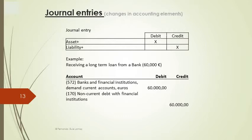We debit the bank account — the increase in the asset cash bank account — and at the same time we recognize the debt with the bank. That is, we credit a liability that stands for the debt with the financial institution. The code numbers on the left of both accounts are taken from the chart of accounts in the Spanish General Accounting Plan, as we will explain further ahead.